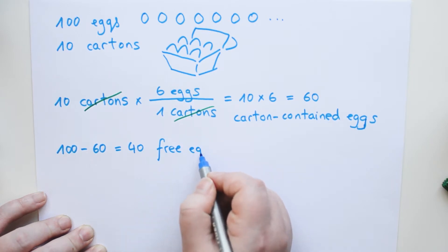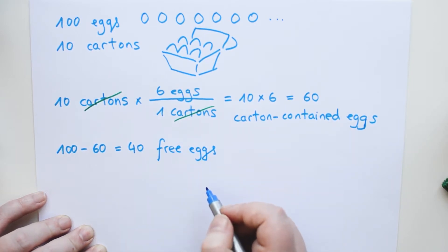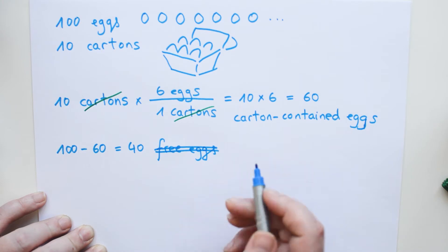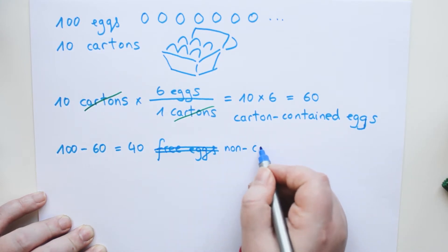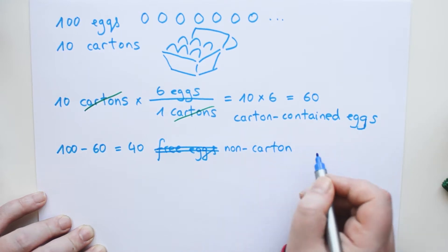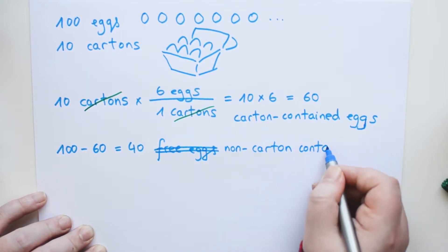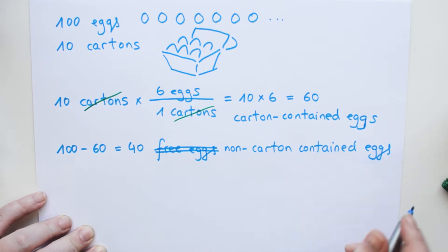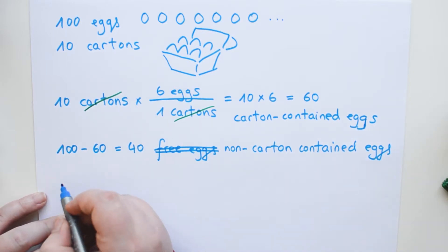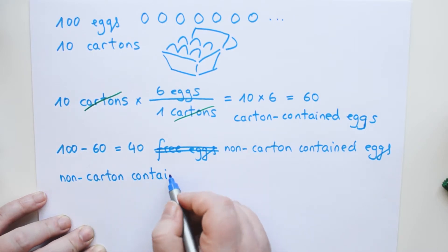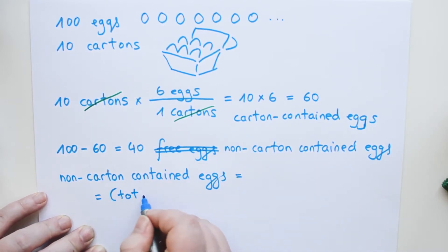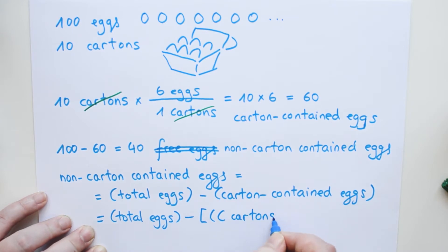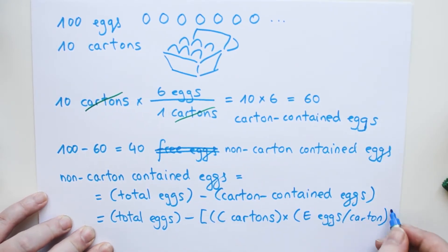But wait — there are a few things you didn't consider. You're assuming that all 10 cartons are full, and you're assuming there's no other container where the eggs might be. Even if there are 60 eggs inside 10 cartons, you still don't know if there are eggs in other containers, such as bowls or little cups designed to hold one egg. So at most, this calculation tells you the amount of eggs that are not inside cartons — the non-carton-contained eggs. We can write this as a formula: non-carton-contained eggs = total eggs − (C cartons × eggs per carton). Remember to do the stuff inside the brackets first.